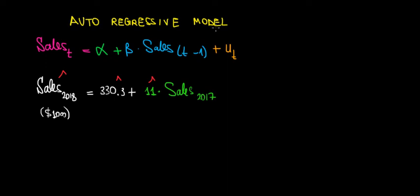In this video, let's have a look at the autoregressive model. So what's the intuition of it? We are basically regressing the outcome variable on a lagged value of itself. Lagged means previous.